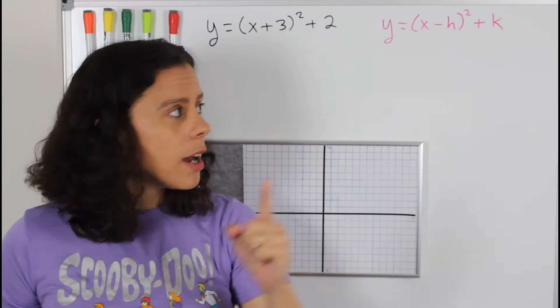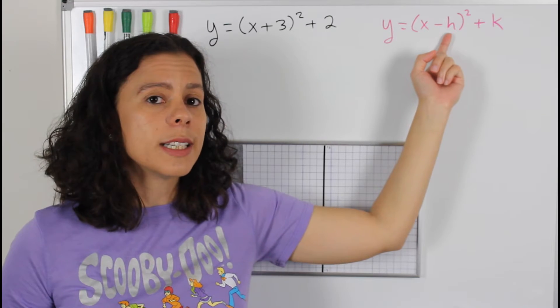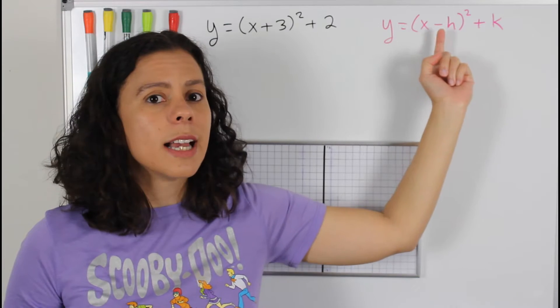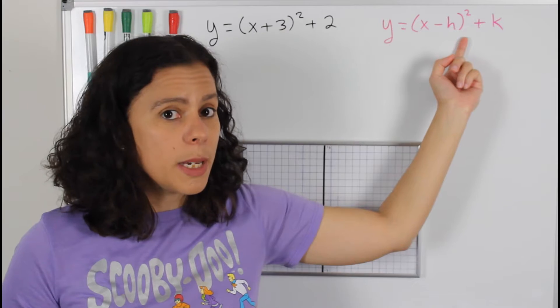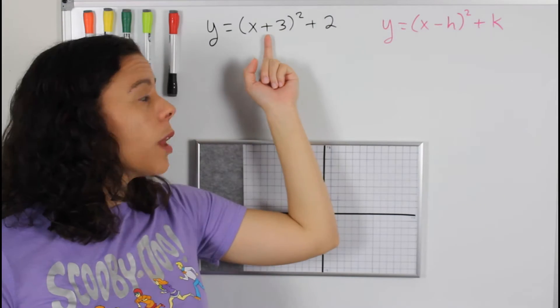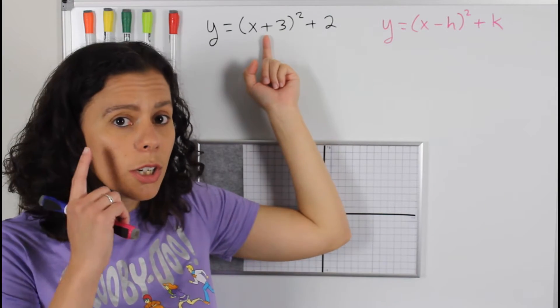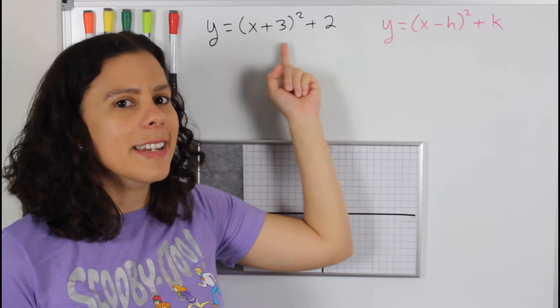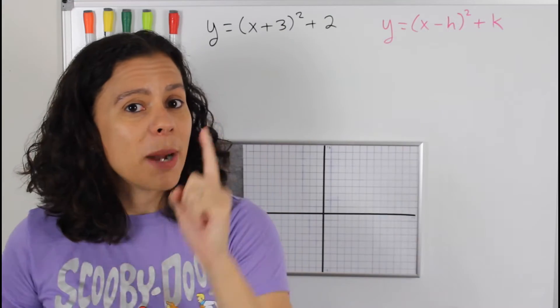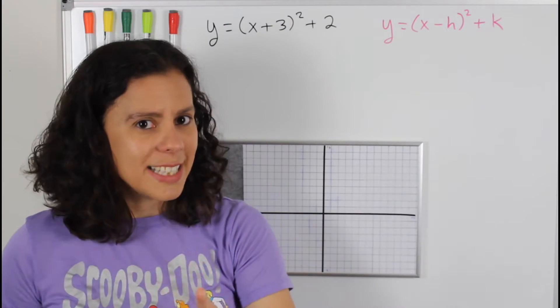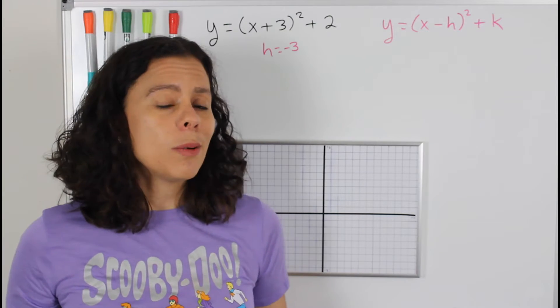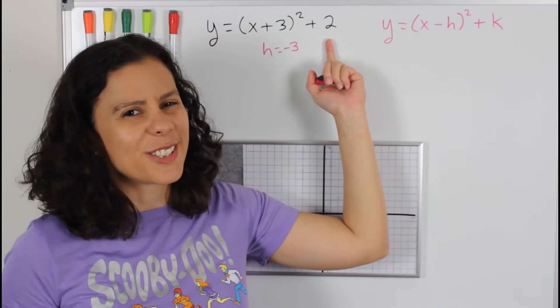But be careful because the equation is written as minus h, which means that this plus three, you have to look at it as minus negative three. So my h is not three, it's negative three. And with the k, we don't really have a problem. The k is just two.